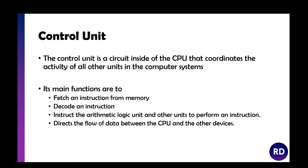The first component is the control unit. The control unit is a little circuit inside the CPU that coordinates the activity of all other units. It fetches instructions, decodes instructions, tells the ALU what it needs to do, and directs the flow of data between the CPU and other devices. It's a bit like a manager — it keeps track of what's doing what, knows what the next instruction is, and keeps everything coordinated.